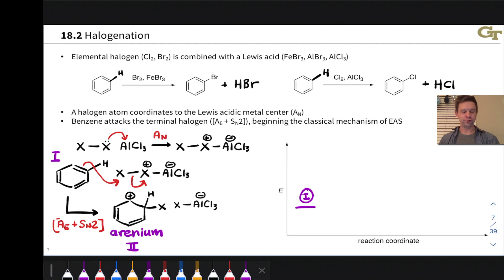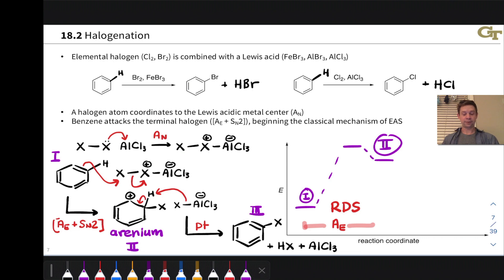One base you can use to do the deprotonation is this AlCl3X anion that we generated as a byproduct of that first step, the leaving group, right? Now has negative charge within it, and this can act as an anion, particularly by the X-Al bonding electrons. And that reestablishes aromaticity and gives us the products.